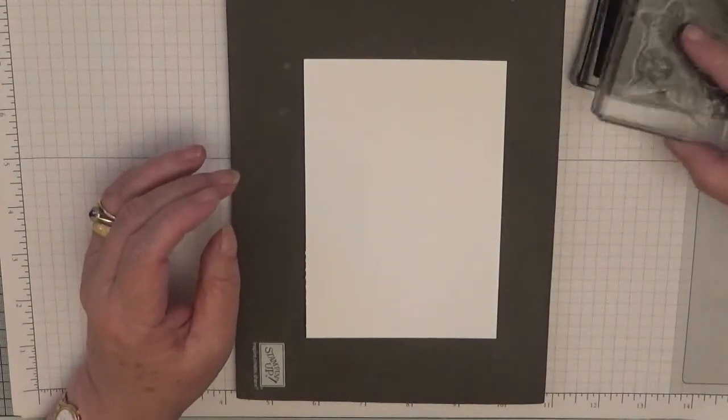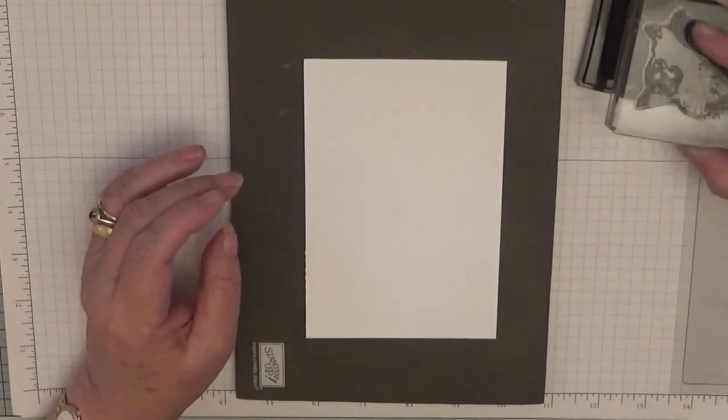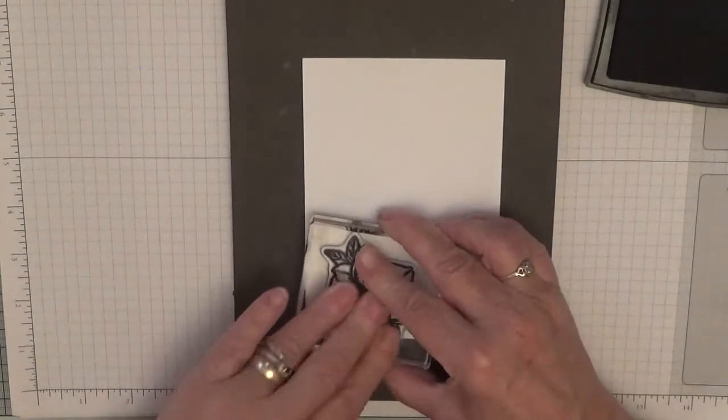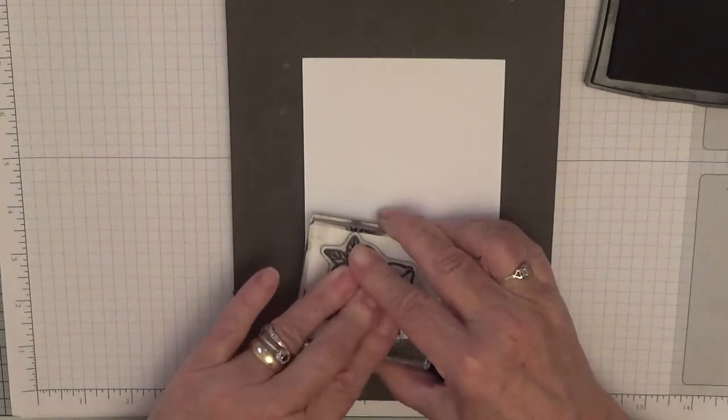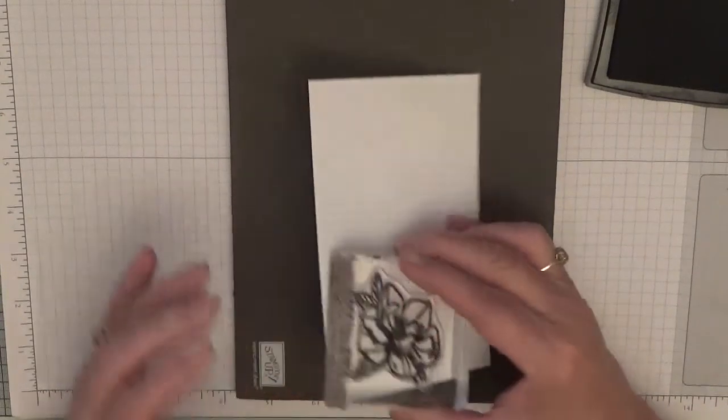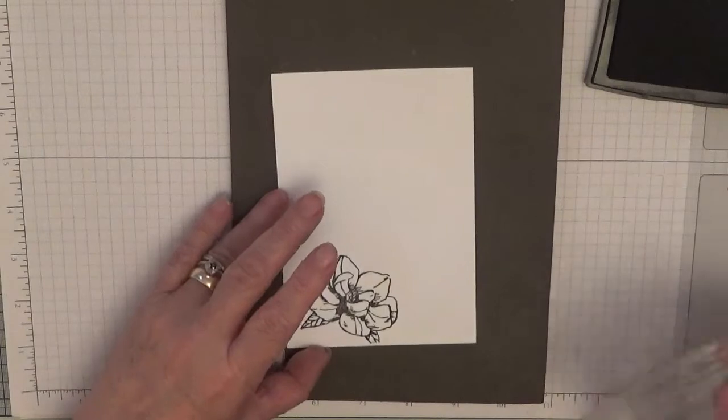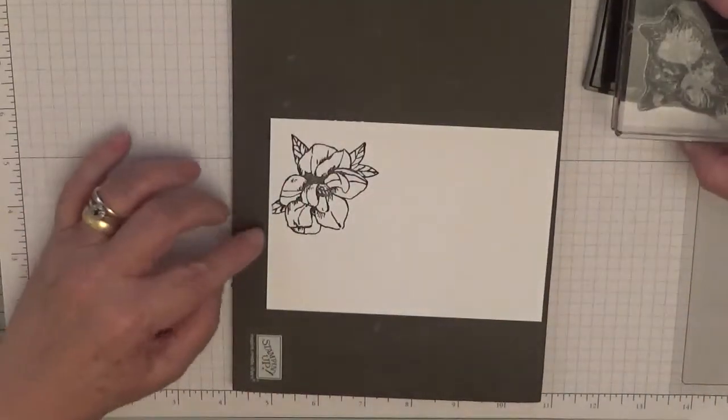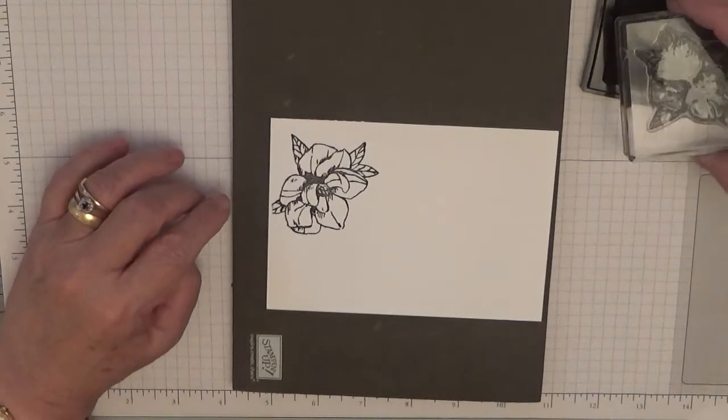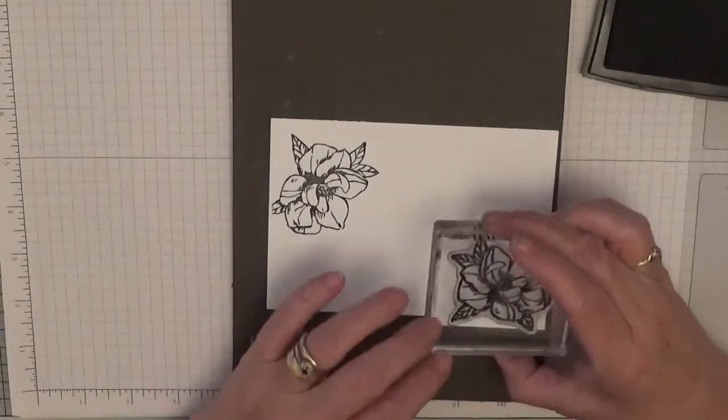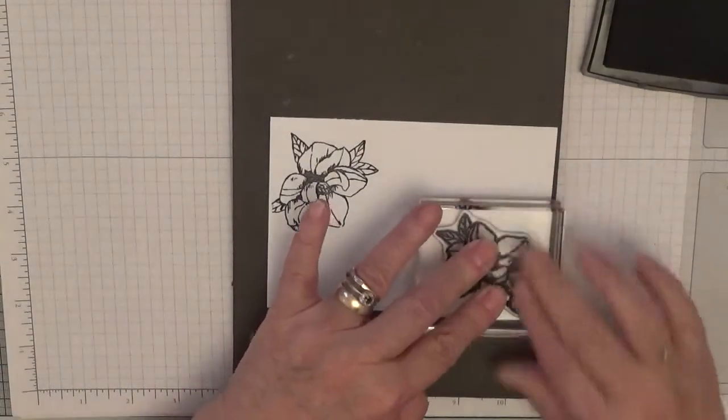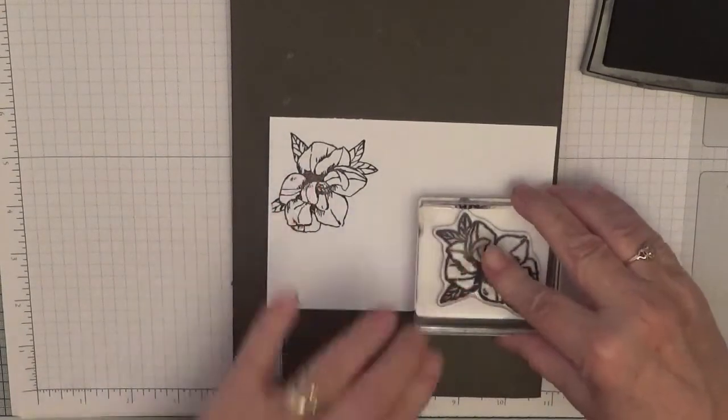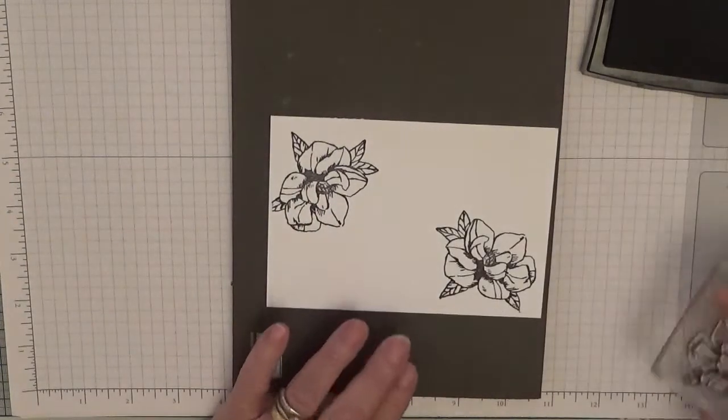So we'll stamp the flower. There is no dies for this. Oh that didn't stamp. You win a bit. There, that's better.